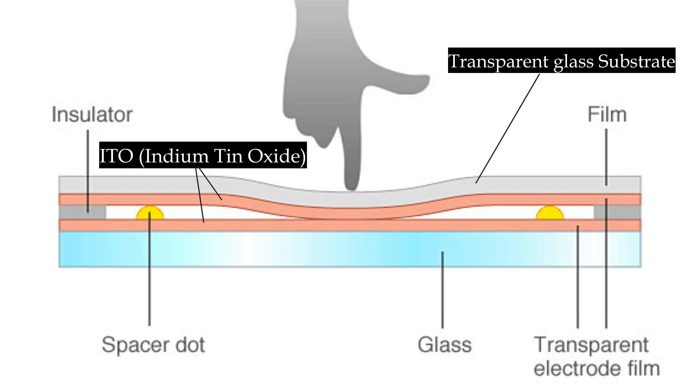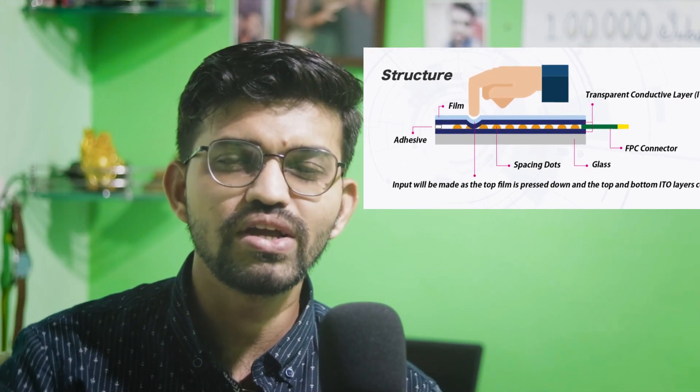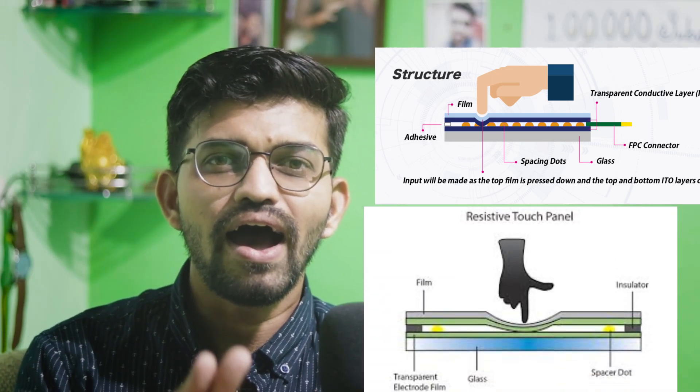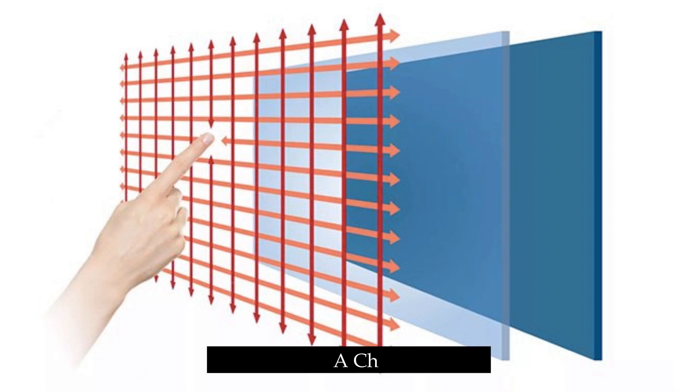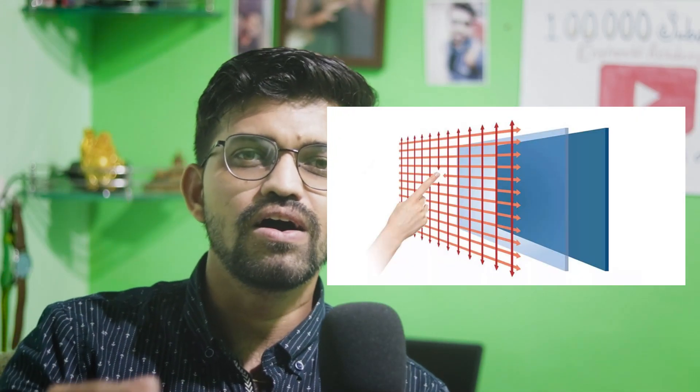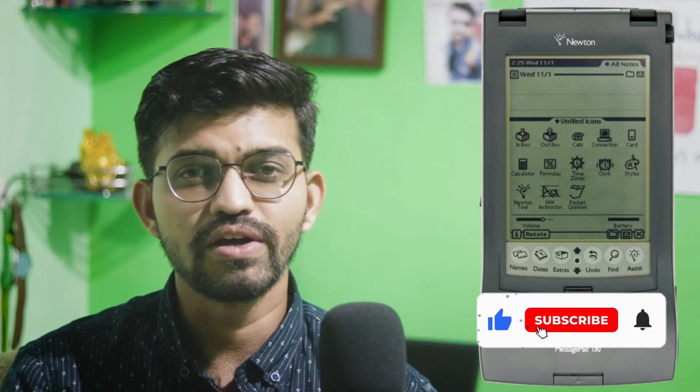When a user interacts with the screen and applies some pressure, the two different conductive layers make contact with each other. That point of contact is detected through a change in resistance — that's why these touch panels are known as resistive touch technology. Those changes in resistance get mapped through the X and Y axis respectively, and then a computer processes that touch. This is how a human interacts with a machine using a resistive display.